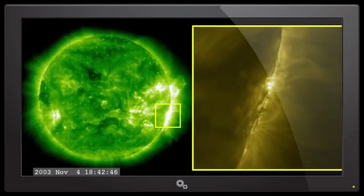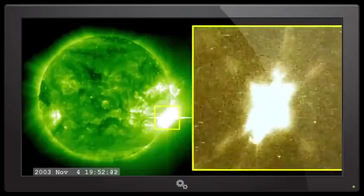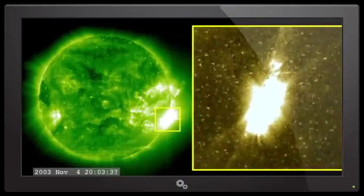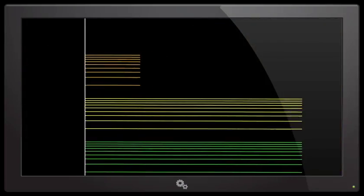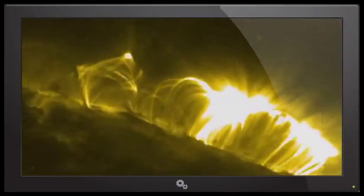The largest solar flare ever recorded happened on November 4, 2003. It was so powerful that it overloaded the sensors measuring it, but later calculations put it at an X45. Flares are classified according to their strength. The smallest ones are B-class, followed by C, M, and X, the largest. An X45 flare is a very powerful flare.